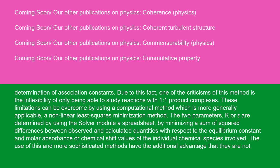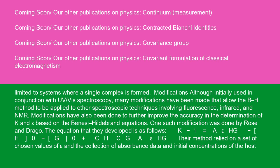These limitations can be overcome by using a computational method which is more generally applicable, a nonlinear least squares minimization method. The two parameters, K and epsilon, are determined by using the Solver module in a spreadsheet, by minimizing a sum of squared differences between observed and calculated quantities with respect to the equilibrium constant and molar absorbance or chemical shift values of the individual chemical species involved. The use of this and more sophisticated methods have the additional advantage that they are not limited to systems where a single complex is formed.